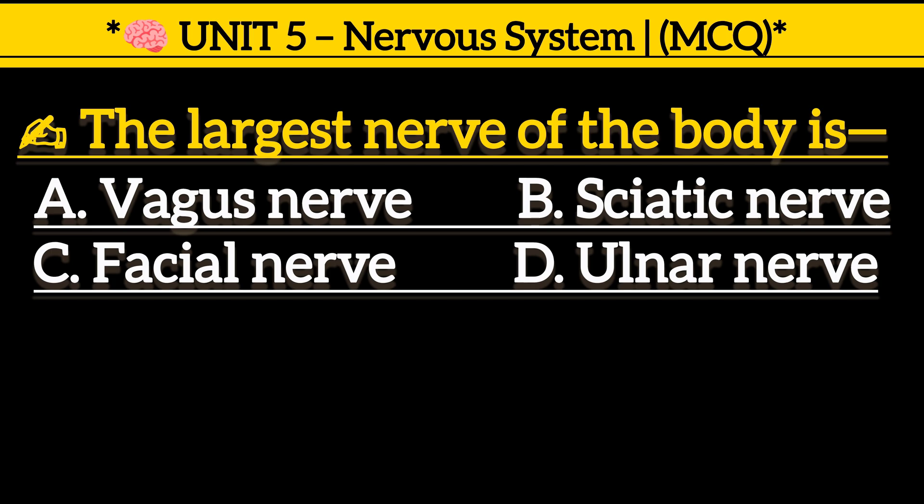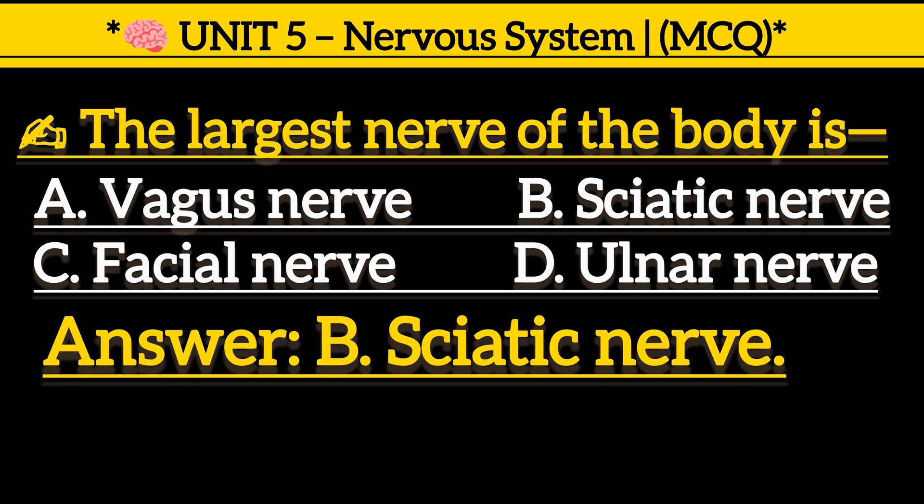The largest nerve of the body is: Option A, vagus nerve. Option B, sciatic nerve. Option C, facial nerve. Option D, ulnar nerve. Correct answer is Option B, sciatic nerve.